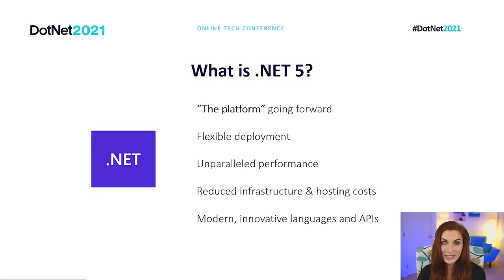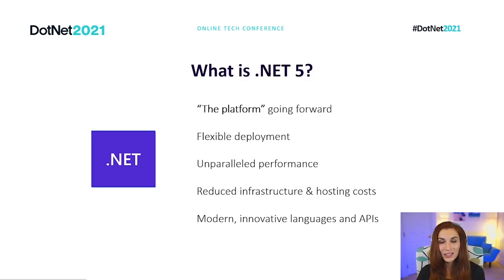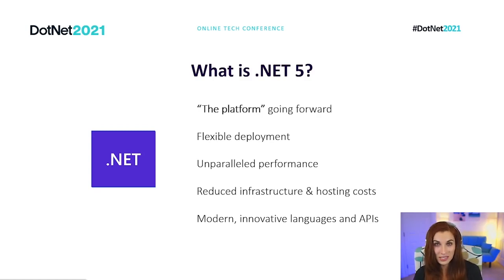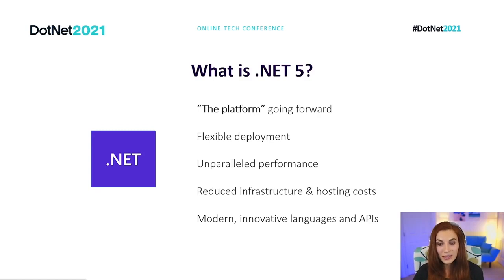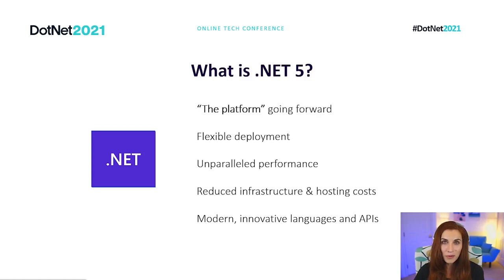.NET 5 is the platform of .NET going forward, meaning that all new changes and improvements will be done in .NET 5 and future versions — .NET 6, .NET 7, and so on. And besides being the platform, .NET 5 is much better than .NET Framework in many aspects, such as deployment options, performance, and many others. In the scope of this talk, let's see why .NET 5 is a great choice for client apps.